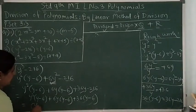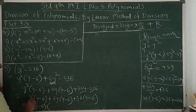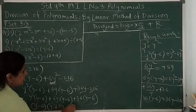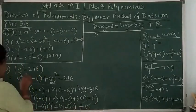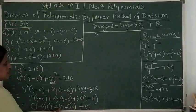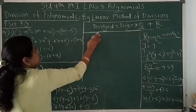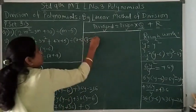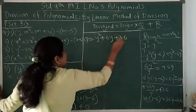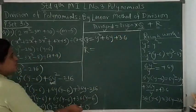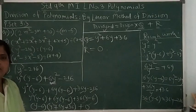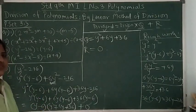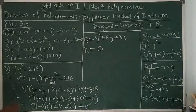All three terms share the common bracket (y minus 6), our divisor. Taking y minus 6 common, the uncommon part is y squared plus 6y plus 36, and nothing remains. So dividend equals (y minus 6)(y squared plus 6y plus 36) plus 0. The quotient is y squared plus 6y plus 36 and the remainder is 0.